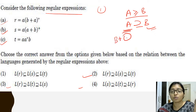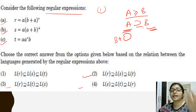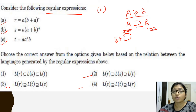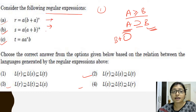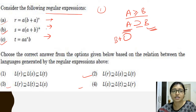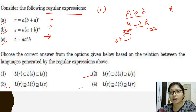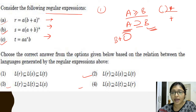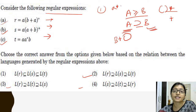The meaning of superset is: whatever elements or content are there in B, they are also in A — but A has more. Whatever is in B is supported by A, but A has some extra things as well. That is the concept of superset and subset. To approach this question, you need to understand which strings each expression can generate.